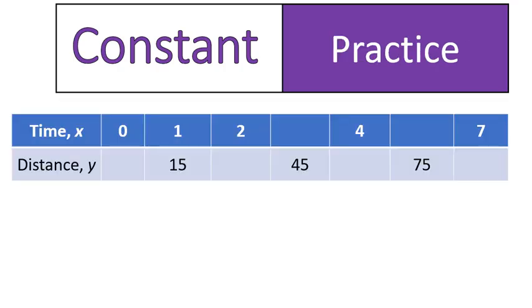Now let's do some practice. This is the other type of table that you might be given. A table where you're told an x value, you're told a y value, and you're not given the constant. And then you have some missing x values and some missing y values. This is a very common question with constants.